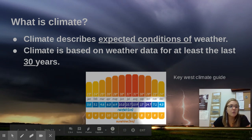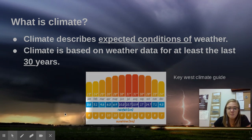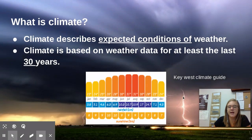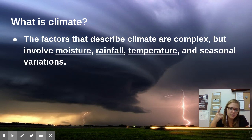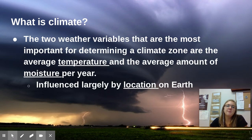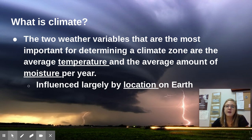It may be that there's a cold front coming through and it gets a little colder than what's normally expected in Key West — but that would be the weather. Climate is what we would normally expect for that area. There are a couple of factors we use to determine climate: moisture, rainfall, temperature, and seasonal variations. The two weather variables most important for determining which climate zone an area is in are the average temperature and the average amount of moisture per year, which is largely determined by where they are located on the globe.